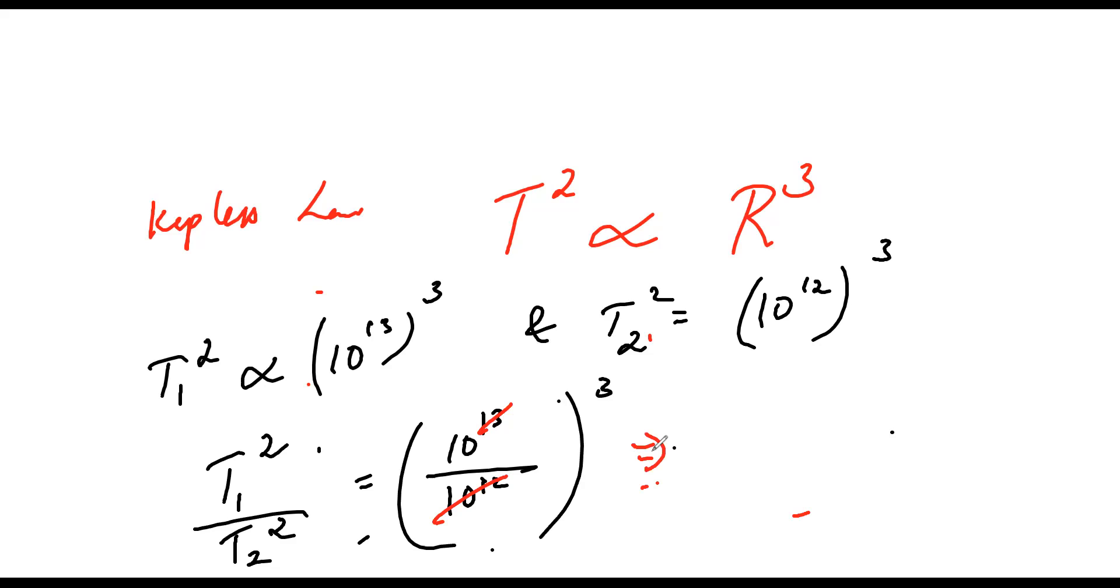This implies t1 by t2 is equal to square root of 10 cubed, which is 10 into 10 into 10 whole power 1 by 2. So the answer of this is 10 root 10 respectively.